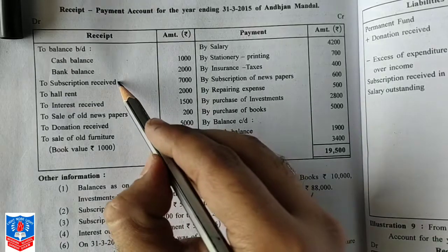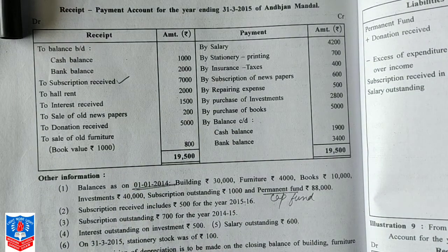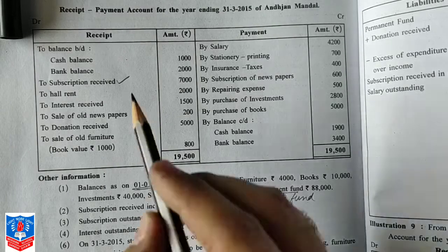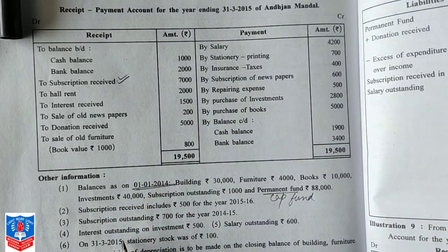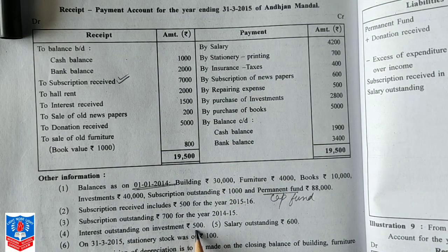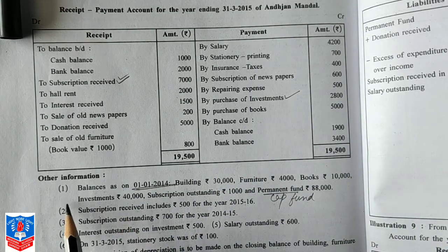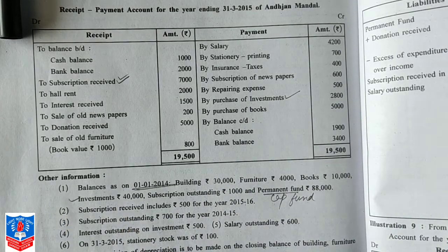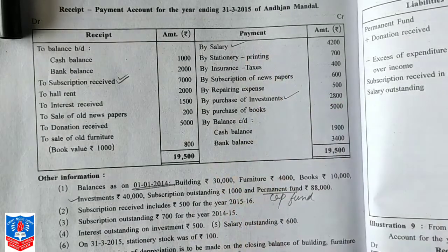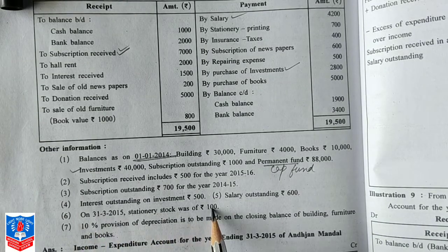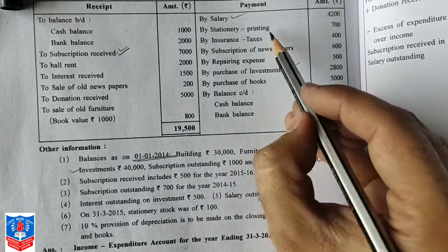The subscription received includes the upcoming year 15-16 as well. Subscription outstanding is 700 for the year 14-15 — put a tick mark here. Interest outstanding on investment — interest on investment is yet to be received, so put a tick mark on purchase of investment. Further, on 31-3-15, stationery stock was of 100.